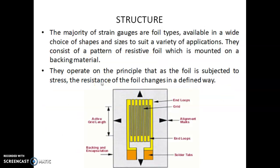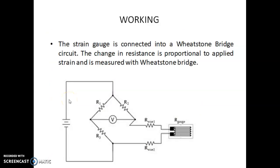The structure of a foil type strain gauge is shown here — the majority of strain gauges are foil types. They operate on the principle that when the foil is subjected to stress, the resistance of the foil changes in a defined way, and this resistance change is used to measure the strain. A Wheatstone bridge is used: one or all resistances are replaced with strain gauges. The change in resistance due to elongation is reflected as a change in voltage by the potentiometer, which is calibrated to give the strain value.